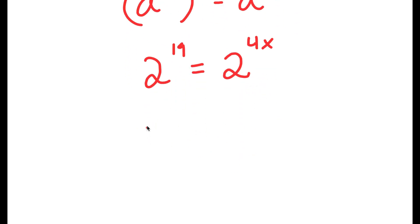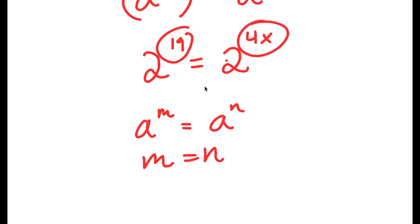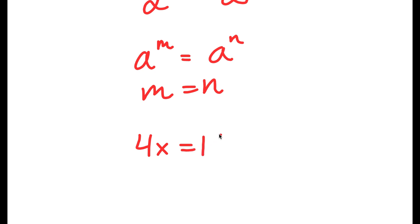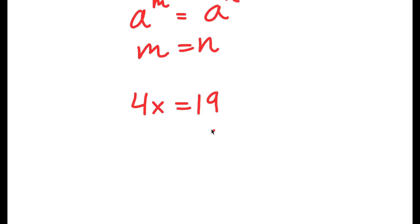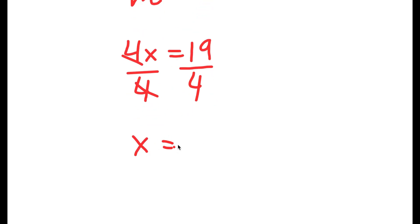Now, if I have something in the form a to the power of m equals a to the power of n, this means m equals n. So in this case, 19 equals 4x. We have a simple equation: divide both sides by 4, and I get x equals 19 over 4.